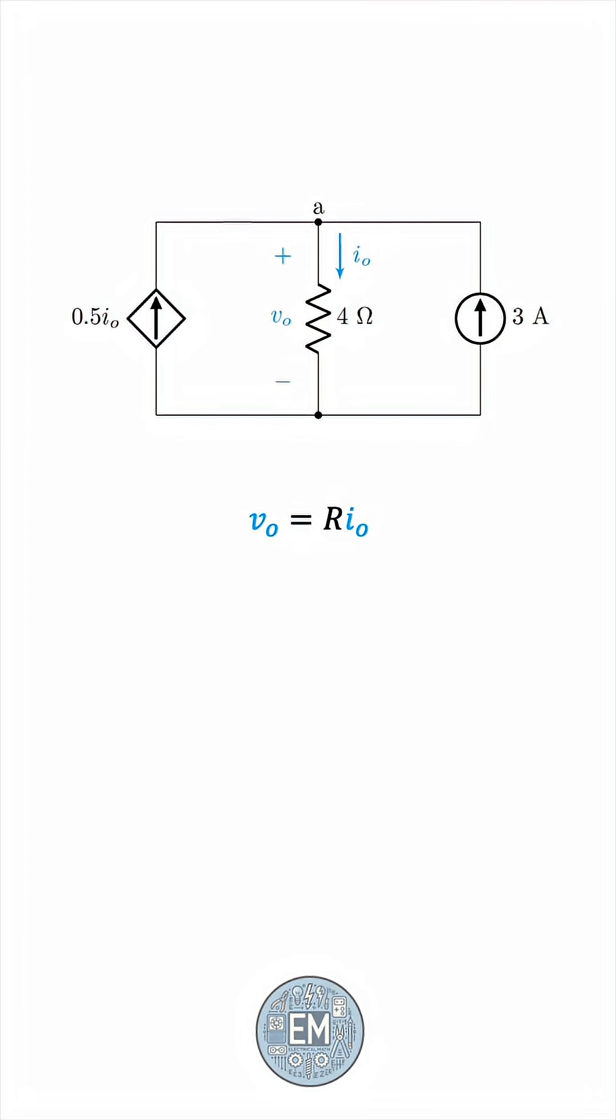We have this current, 0.5 IO, coming from the dependent source, and this current, 3 amperes, coming from the independent source. By KCL, we know that the sum of the two currents must be IO, the current exiting node A.